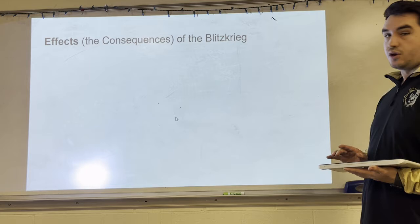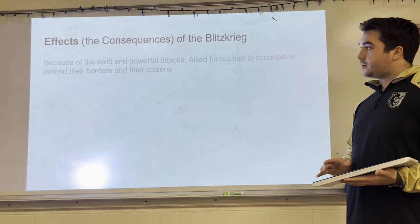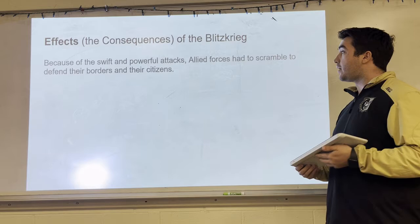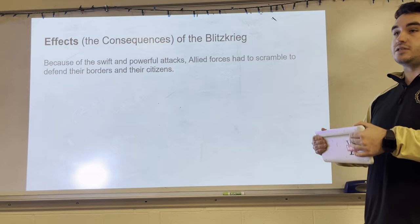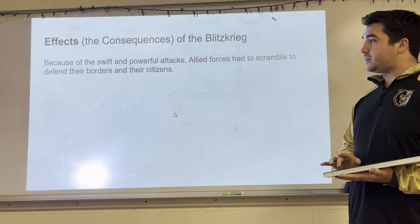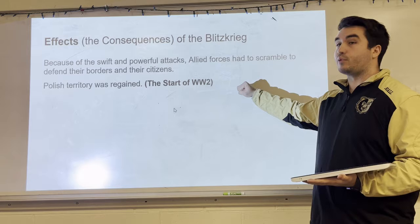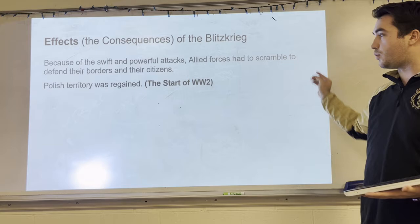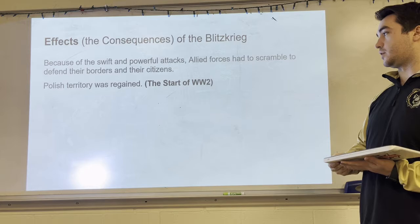Now for the effects — the consequences of the blitz. Because of the swift and powerful attacks, Allied forces had to scramble to defend their borders and citizens. They had no aggression in this section of the war — Germany was pushing constantly. This also led to Poland being retaken quickly by Germany, which really starts World War Two. So one consequence of the blitz is essentially the start of the war itself.